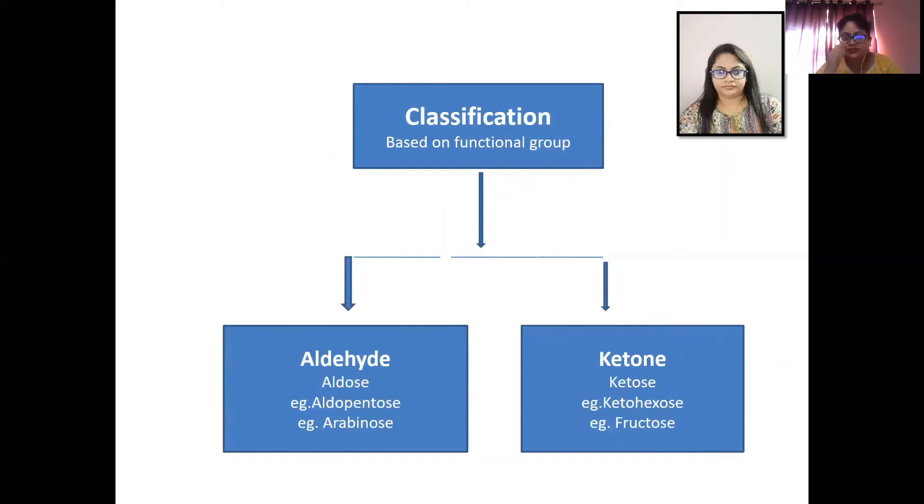And other classification is based on the functional group present in it. As I have said, either aldehyde or ketone group will be present in a carbohydrate. If there is an aldehyde group present, this is called aldose, for example aldopentose, arabinose etc.